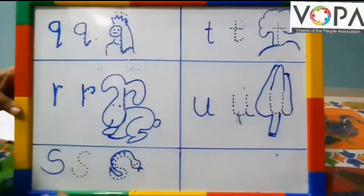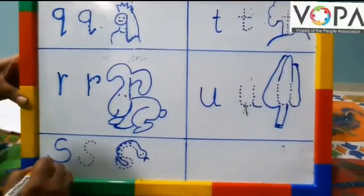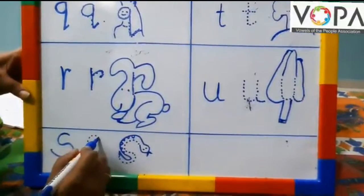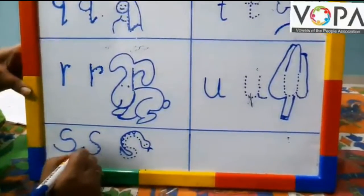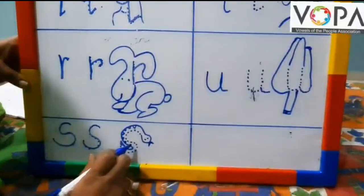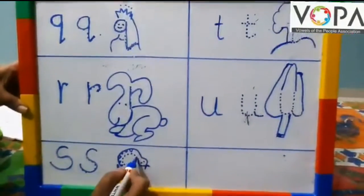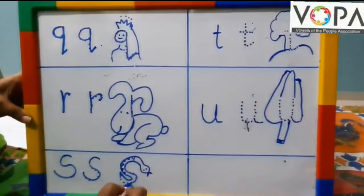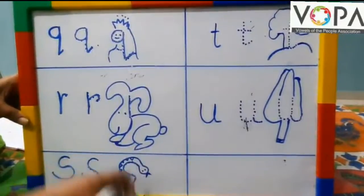Q. R. This is S. This is how you write letter S. Let us see. S. S for Snake. You can also draw Snake with letter S. S for Snake.